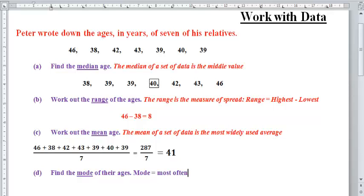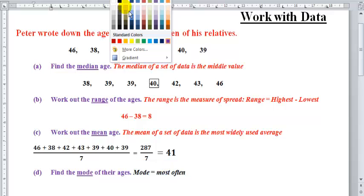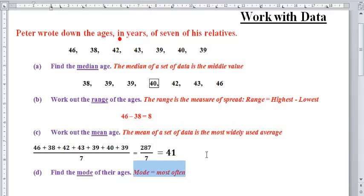The most often data. In this case, 39. How do we know that 39 is the most often data? If you look up here, we have 46 once, 38 once, but in the case of 39, we have 39 twice. So that answers the very question of the most often data, which is 39.